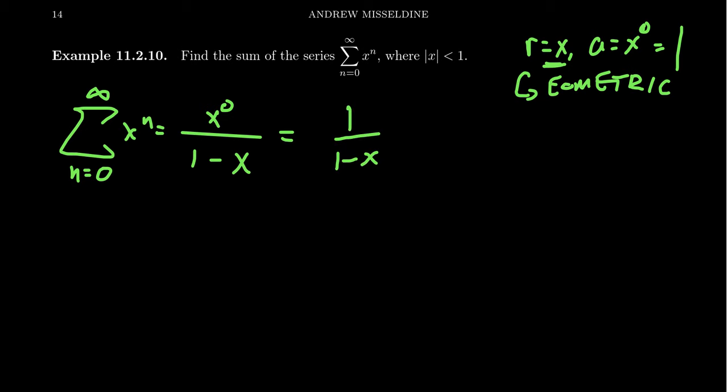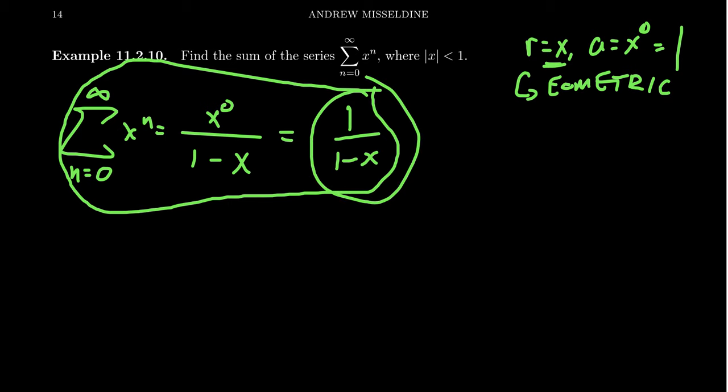And so what we see right here is that this geometric series because of the variable present, this is often referred to as a power series. This geometric series is actually equal to the expression, the formula of 1 over 1 minus x, where this is a formula for x right.